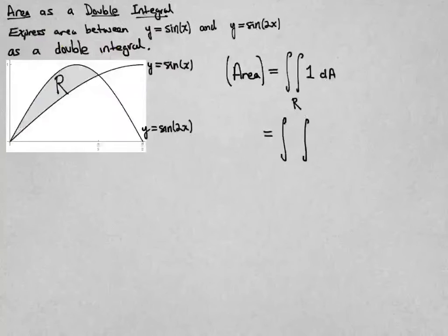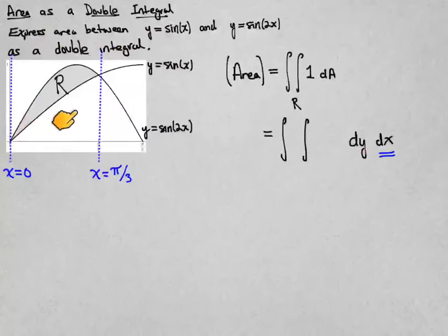We first need to make a choice of order, and I'm going to do x as the outer limit of integration and then y in the inner one. So once I've made that choice, I've got to think about the values of x as I move through the region. The x values start at 0 and then they end right where these two curves intersect, and it turns out that happens at π/3. So that tells me my limits of x integration go from 0 to π/3.